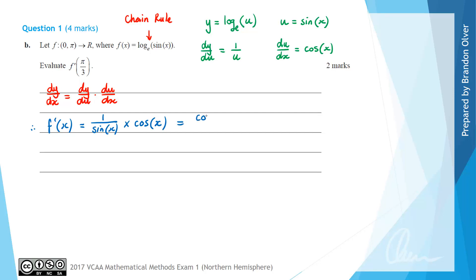Next, we evaluate that derivative when π/3 is substituted for x, so we get cos(π/3)/sin(π/3). Now cos(π/3) is 1/2, divided by sin(π/3), which is √3/2. Instead of dividing fractions, we multiply by the reciprocal: 1/2 × 2/√3, which equals 1/√3.